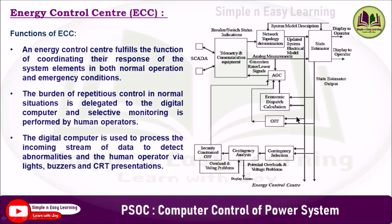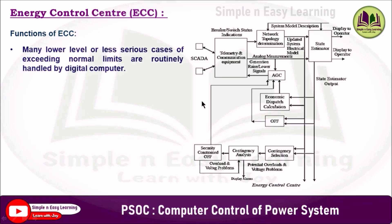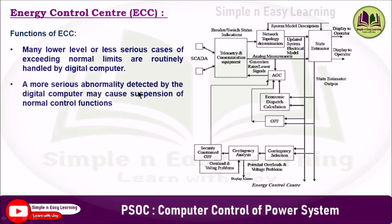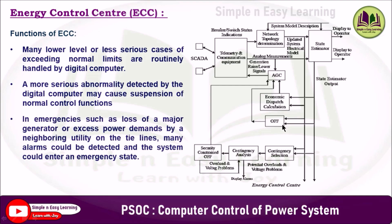The digital computer is used to process the incoming stream of data to detect abnormalities, and human operators are alerted via lights, buzzers, and CRT presentations. Many lower-level or less serious cases of exceeding normal limits are routinely handled by the digital computer. More serious abnormalities detected by the digital computer may cause suspension of normal control functions. In emergencies such as loss of a major generator or excess power demand by a neighboring utility on the tie lines, an alarm could be detected and the system could enter into an emergency state.